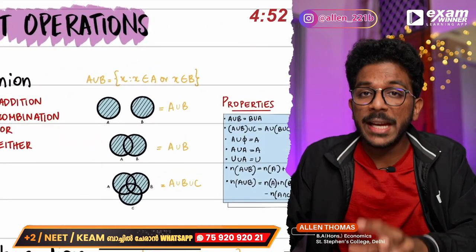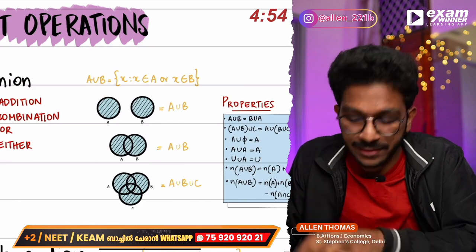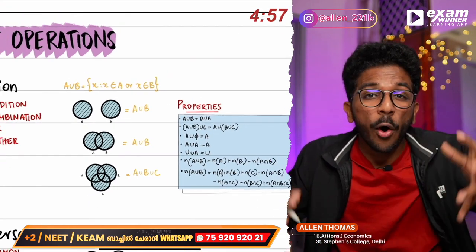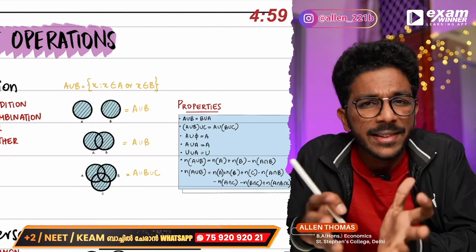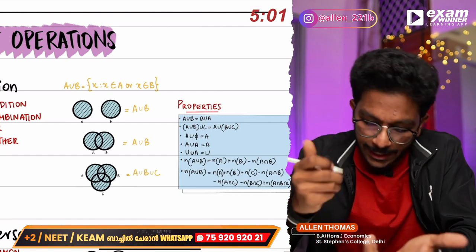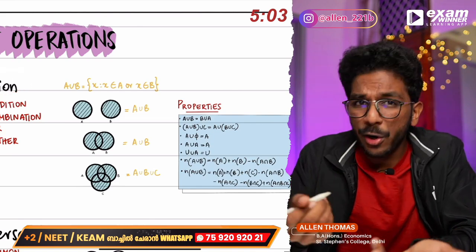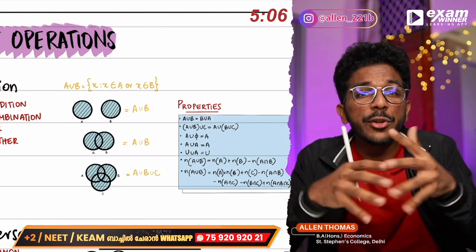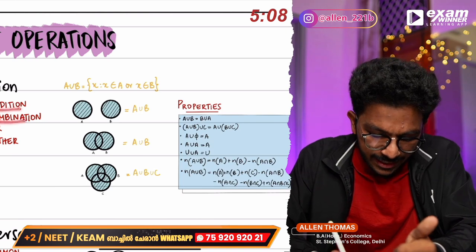We also consider set operations. Just as we learn addition, subtraction, and other operations on numbers in school, now we learn the set operations. Addition is also called union — one set union with another.